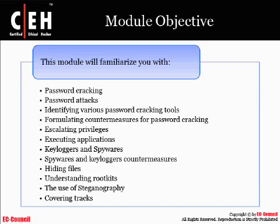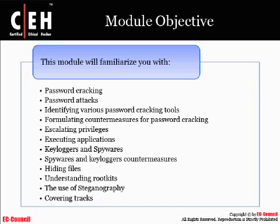We'll take a look at executing applications, which is the whole activity process here. With that we start getting into keyloggers and spyware, and we'll start taking a look at the things we can do for countermeasures on those. Then we get into hiding files — there are actually a lot of really cool things you can do there. NTFS streams are something that a lot of people don't use as effectively as they could. We'll take a look at understanding rootkits, then we'll get into steganography.